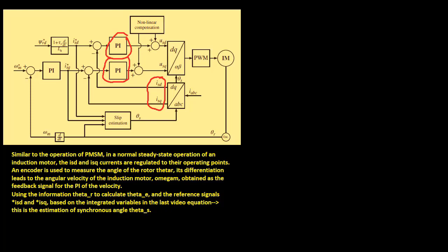An encoder is used to measure the angle of the rotor theta r. Its differentiation leads to the angular velocity of the induction motor omega m, obtained as the feedback signal for the PI controller of the velocity.